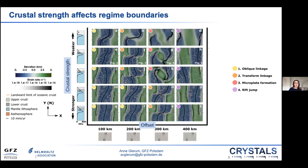Besides offset, crustal strength also shifts the regime boundaries between different types of linkage. By increasing the amount of lower crust — making the overall crust stronger — the ratio of plastically to viscously deforming material increases, resulting in greater plastic strain localization and faults connecting rather than diffusely propagating. Therefore the generated overlap is smaller, and at high strength, larger initial offsets are needed to generate transform faults — we only see them for 300 kilometers offset — and microplates do not form. Inverting that argument, the presence of microplates informs us about the rheology of the crust.